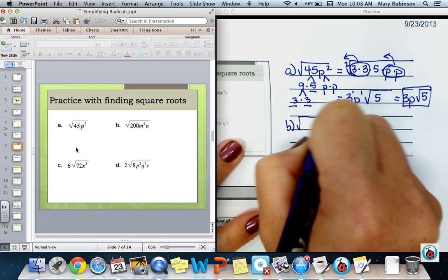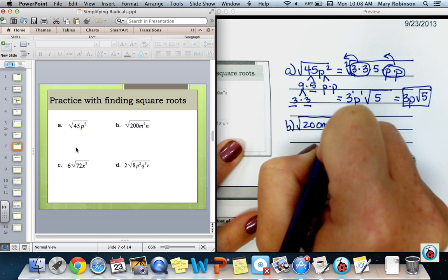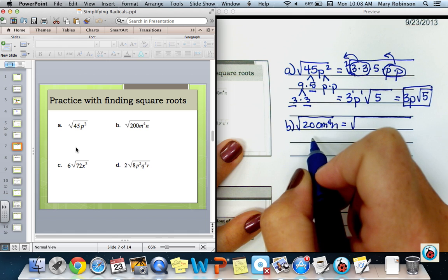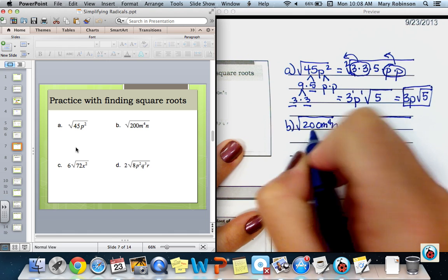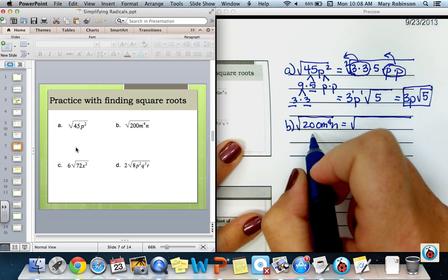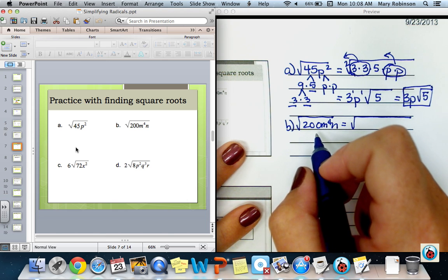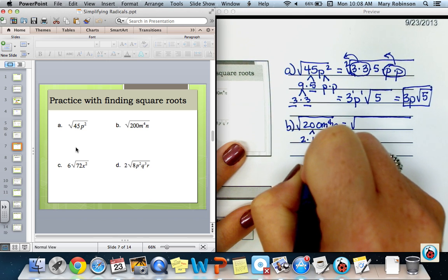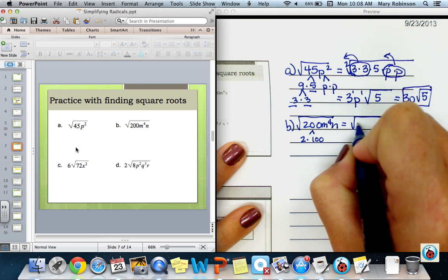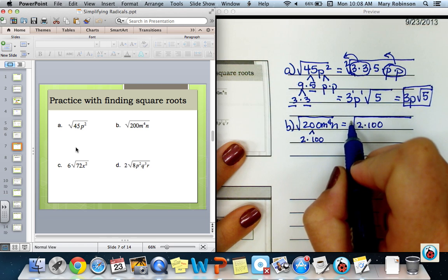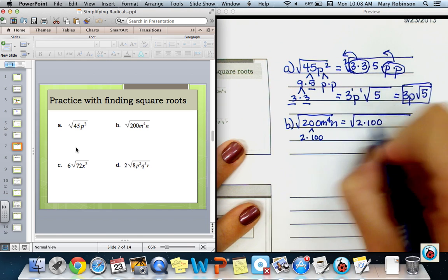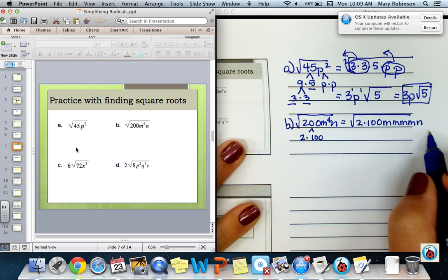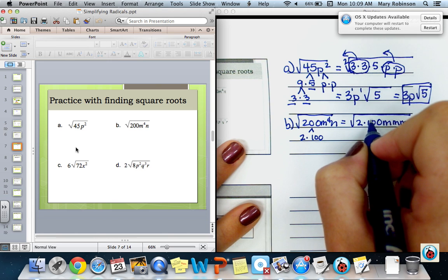For part B, we have the square root of 200 m to the 4th n. I will expect that you can eventually write out all of your factors without having to do the factor tree. But also think, if you can find a factor that is a perfect square, then by all means, you already know that that will help you to simplify. In other words, I know that 200 is 2 times 100. If I write out under my radical 2 times 100, I know that I'm taking the square root of 100, which is 10. Again, if you'd like, you can write all of your variables out. So we have 4 m's and 1 n.